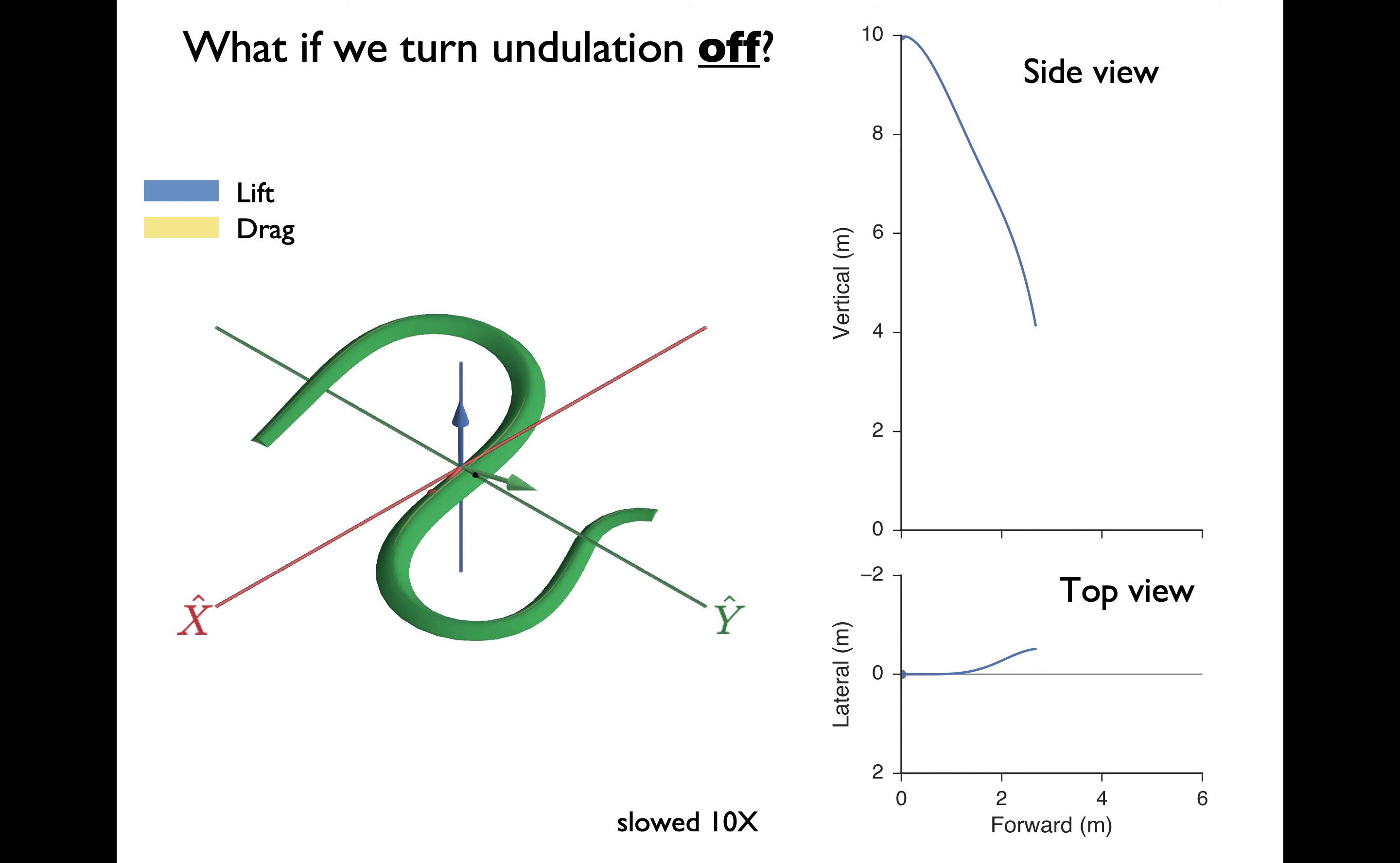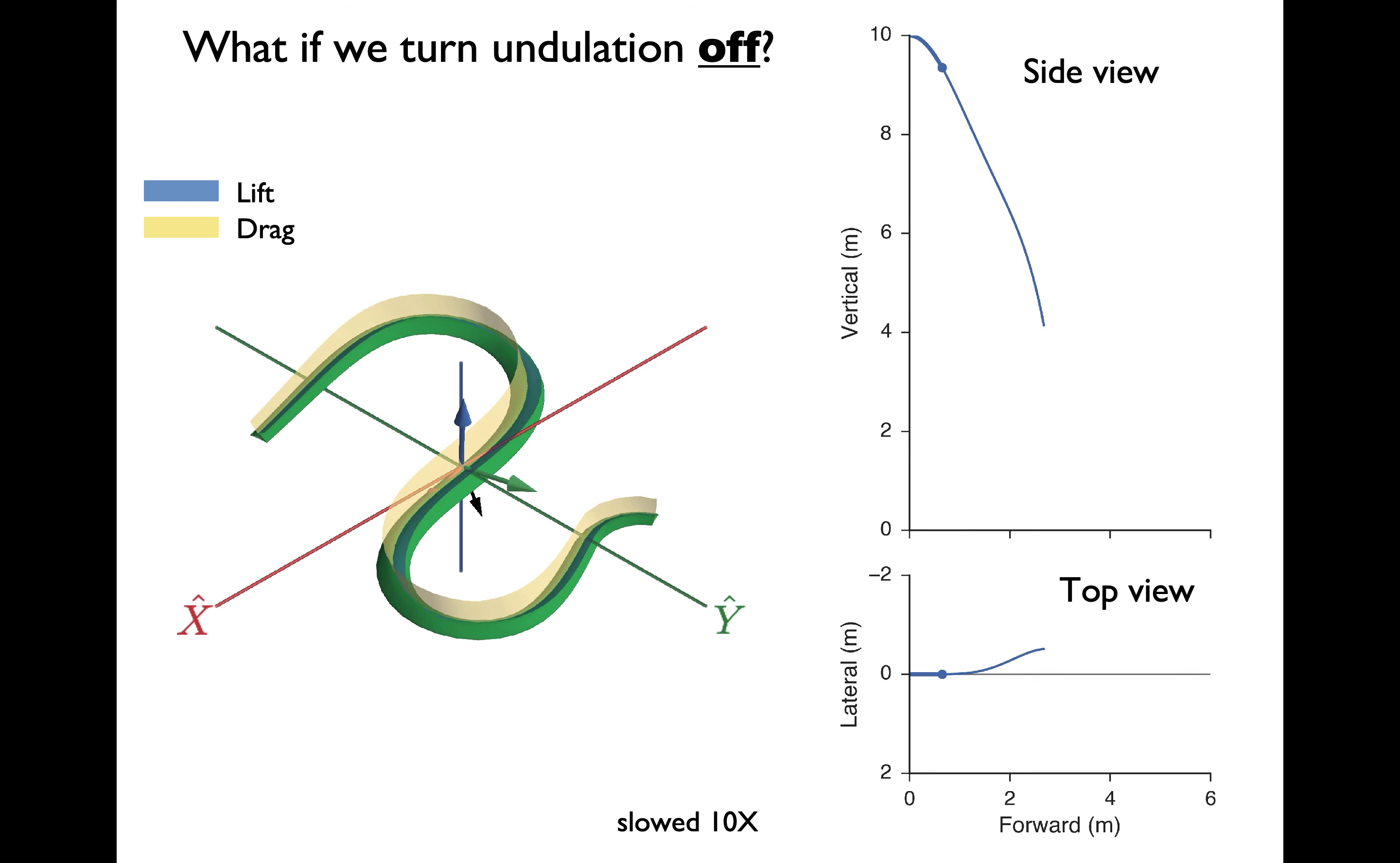A question we can ask with the mathematical model is, what if we turn undulation off? Here's a glide with the exact same initial conditions, except with no undulation. Very quickly, forces are produced, but because the snake's body shape is asymmetric, there is a force imbalance, and the animal goes unstable, turning completely over, and we stop the simulation.